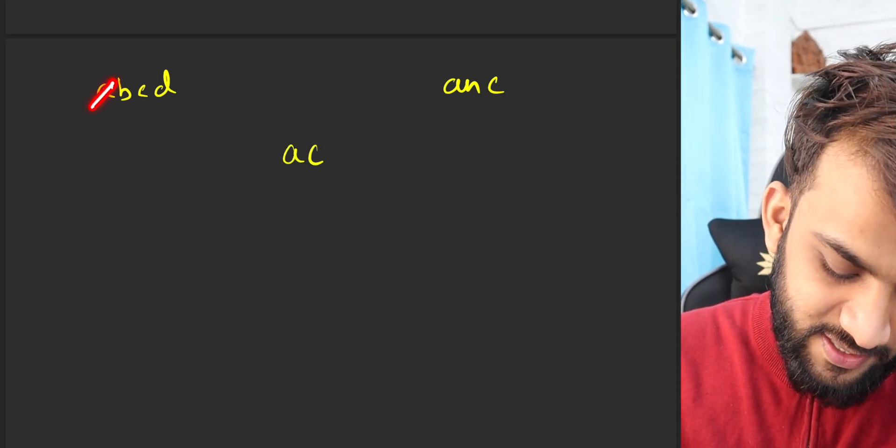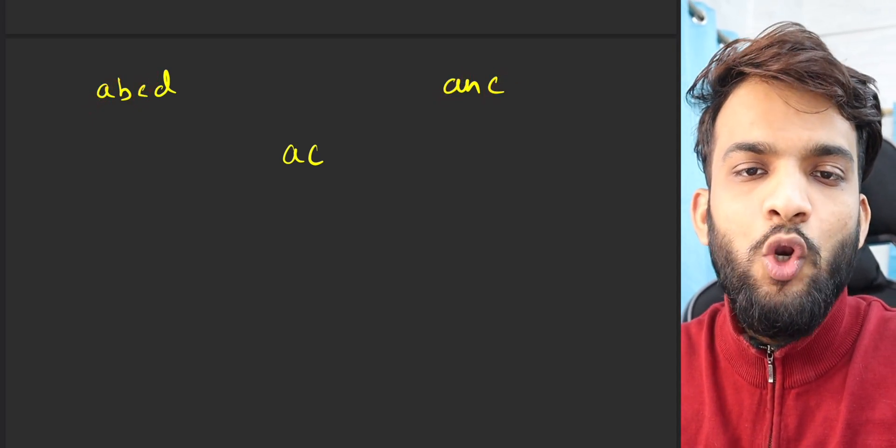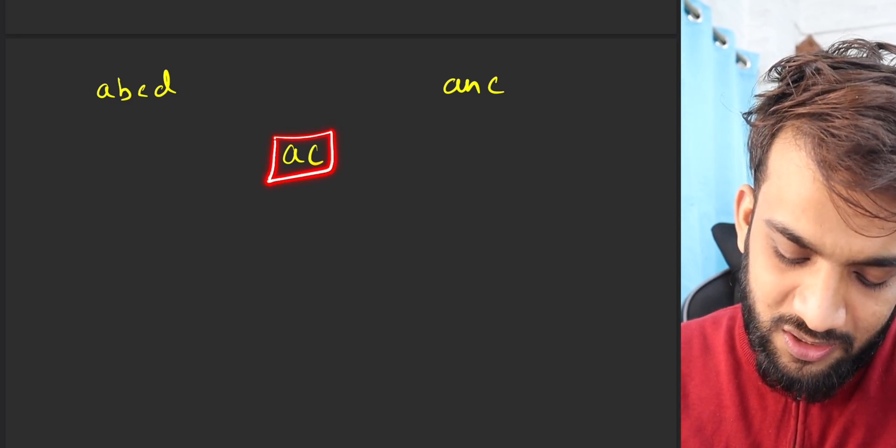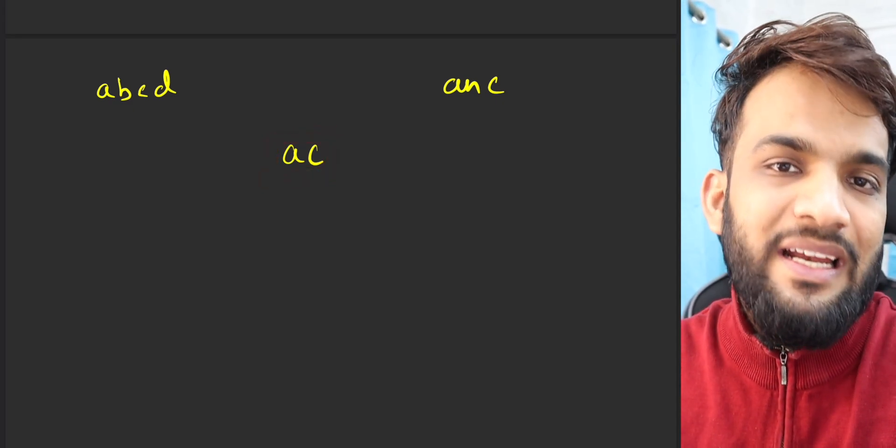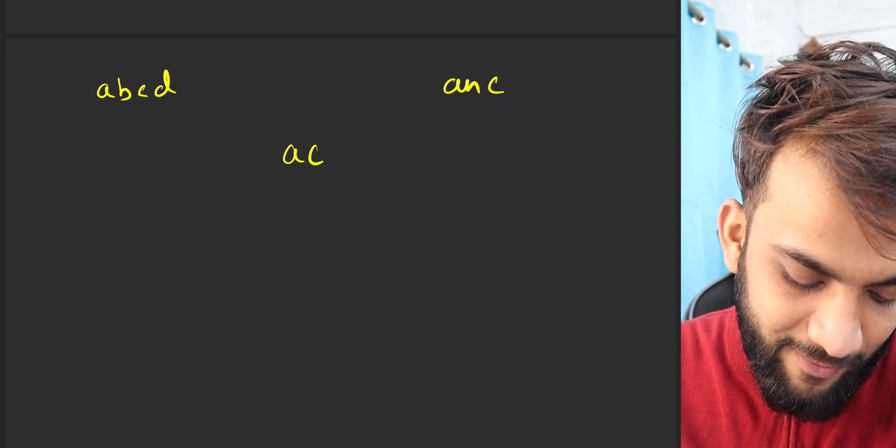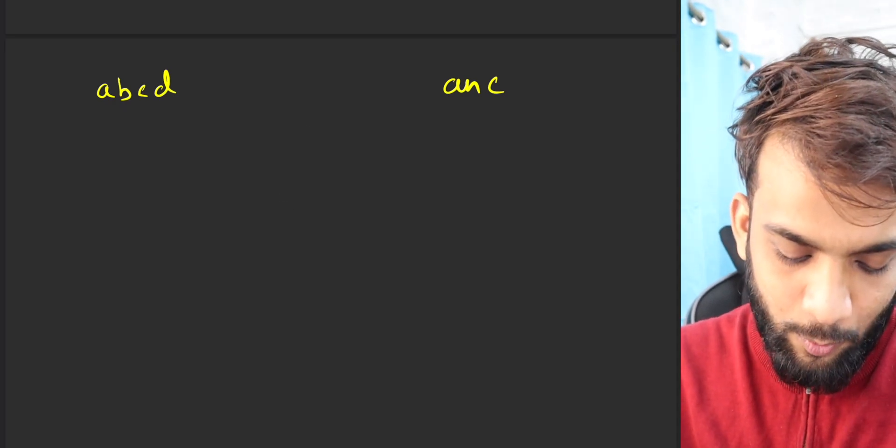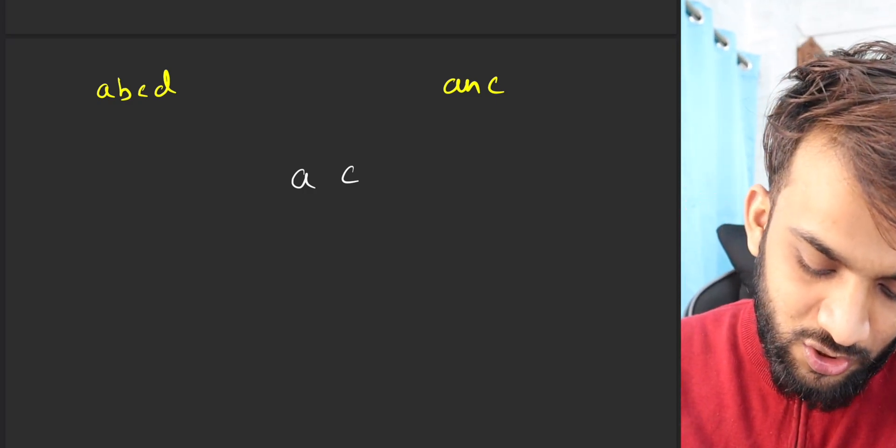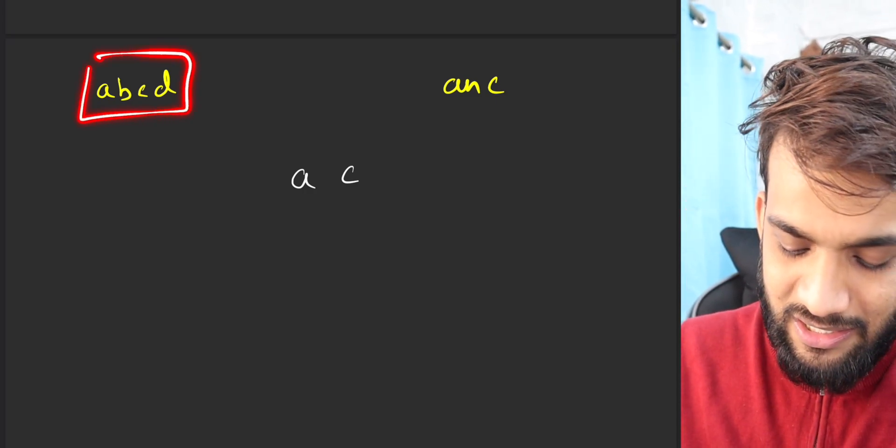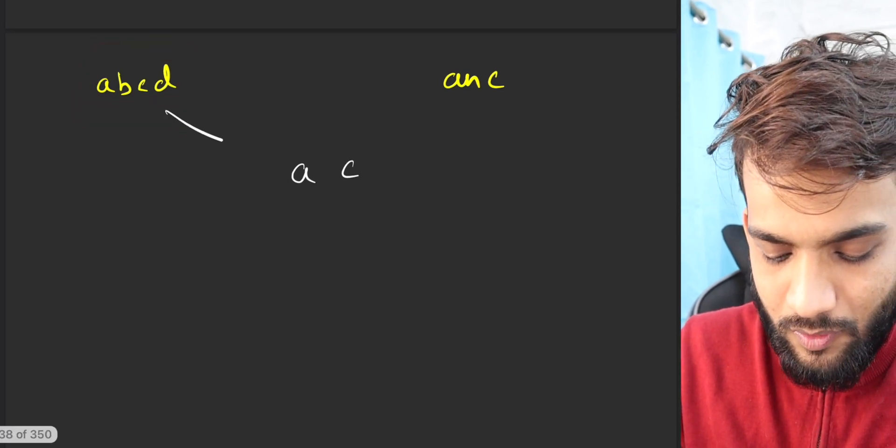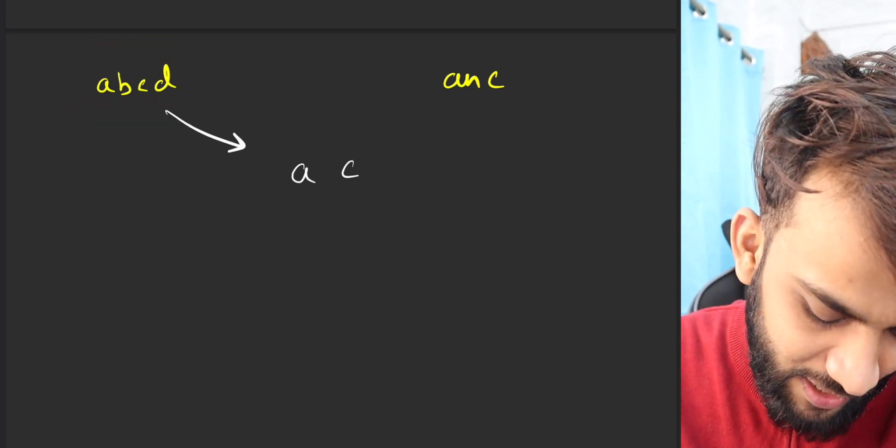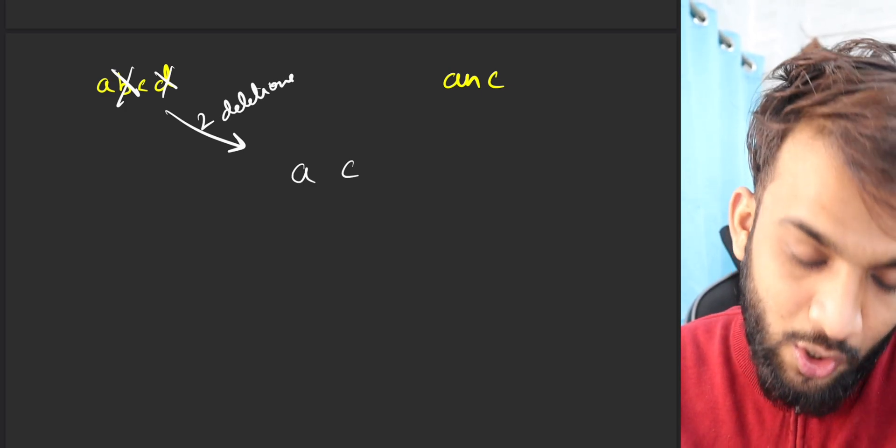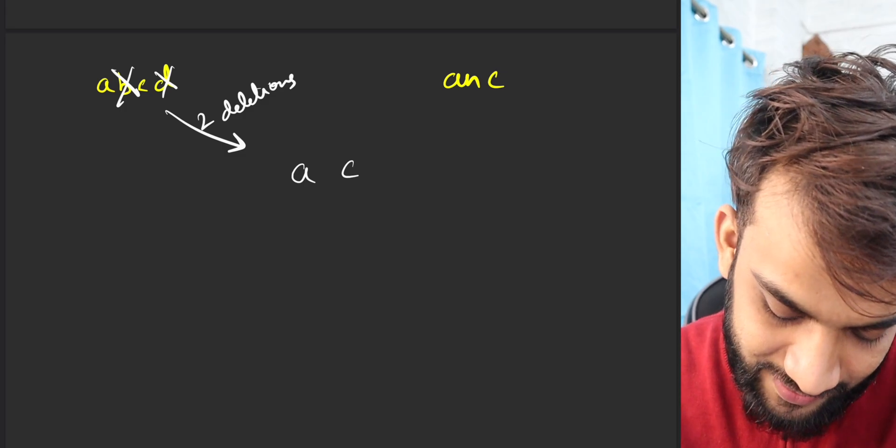My brain says the common portion among them is somewhere around AC. If you carefully see, AC is the longest common portion. So if I can keep this intact, I'll keep this intact. I'll try to do everything in between them. I'll keep A and C intact and I'll try to do everything in between them. So in order to make ABCD into AC, what do I need to do? I will have to make two deletions, which is deleting B and D.